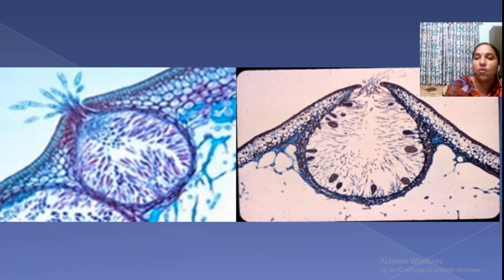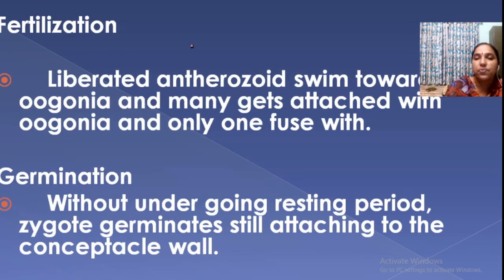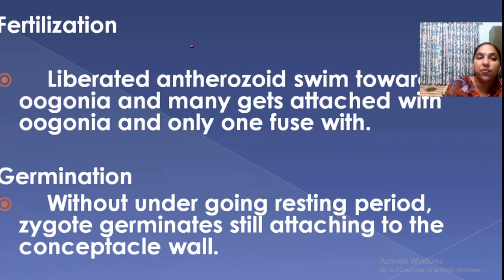This is the microscopic view showing oogonia and antheridia structures. For fertilization, liberated androzoids swim towards the oogonia, attach and fuse. The resulting product is a zygote, which germinates by attaching to the conceptacle wall.